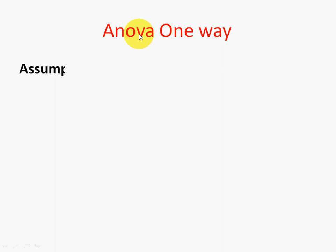Good morning students. Today we are going to discuss the ANOVA one-way problem. When can we use ANOVA one-way? When you come across more than two samples, you have to use ANOVA. ANOVA one-way is used when the problem depends upon one factor.